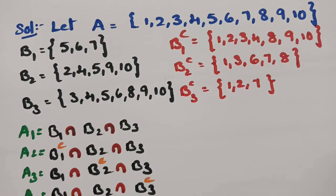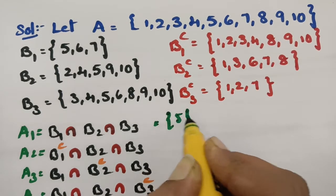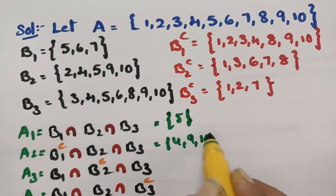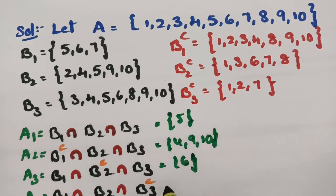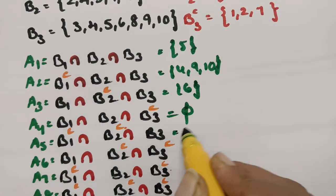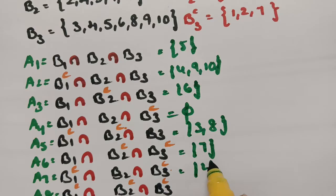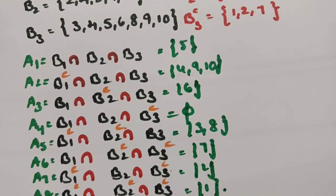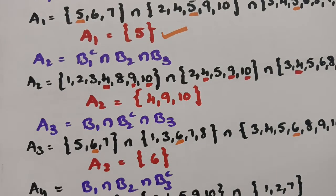So writing all the MinSet values: A1 = {5}, A2 = {4, 9, 10}, A3 = {6}, A4 = empty set, A5 = {3, 8}, A6 = {7}, A7 = {2}, A8 = {1}. These are all 8 MinSet values. We got 8 MinSets because we have 3 subsets, and 2 to the power of 3 equals 8.